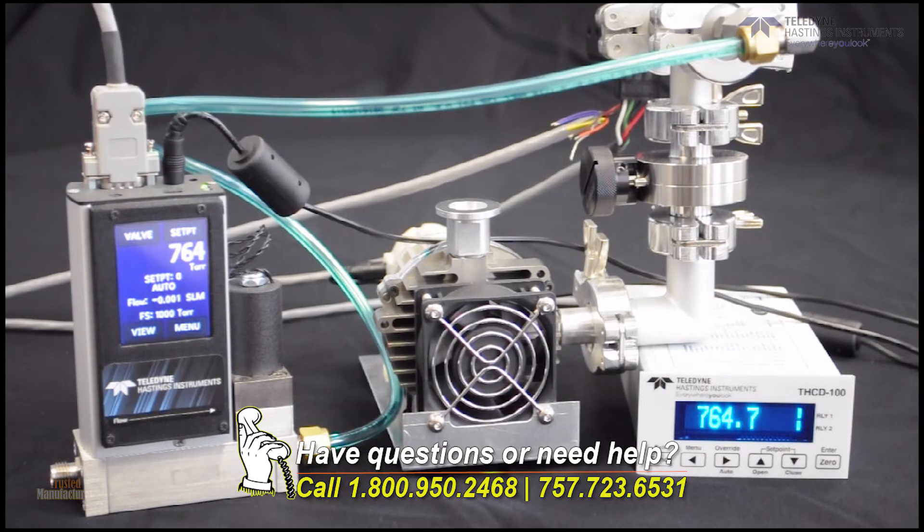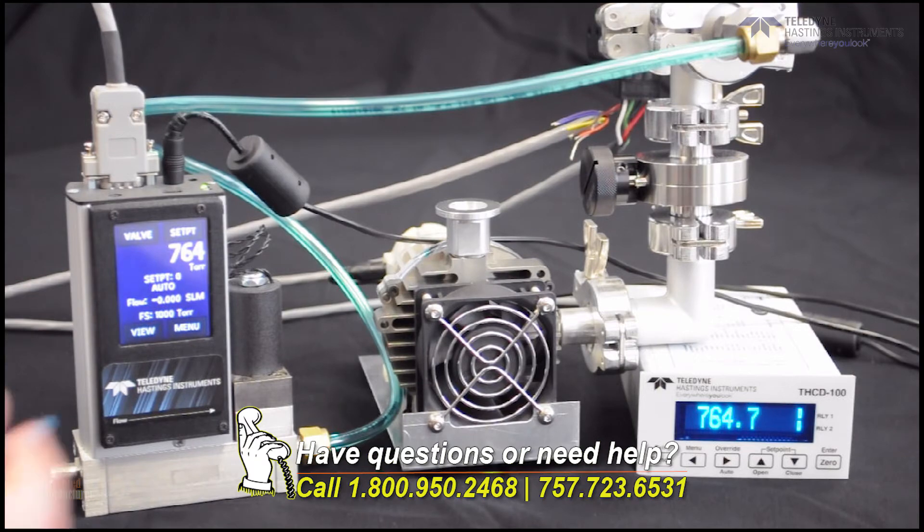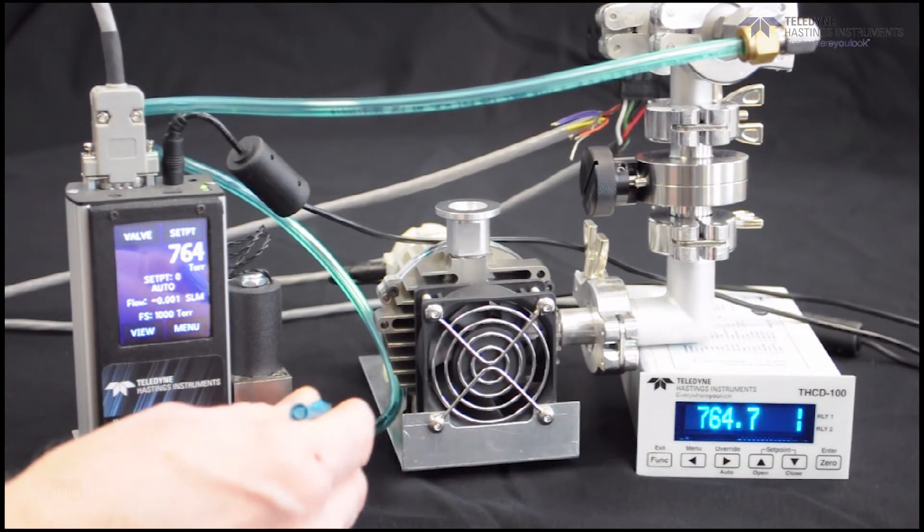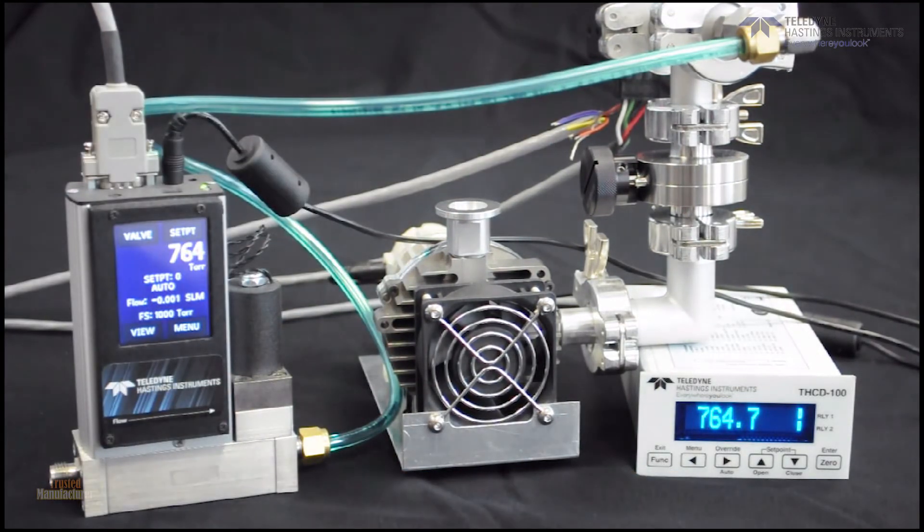One more thing about this setup. You'll notice that I have upstream of the flow controller—upstream is drawing air from the atmosphere. The downstream side here is connected to the vacuum system.